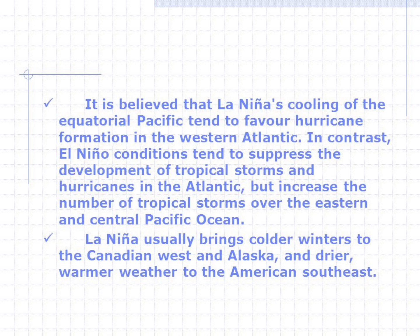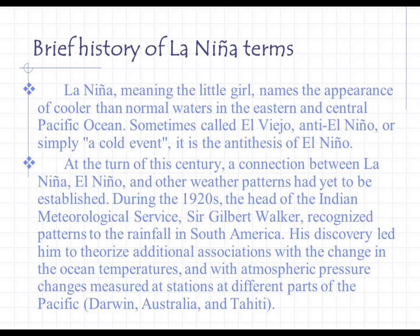In contrast, El Niño conditions tend to suppress the development of tropical storms and hurricanes in the Atlantic but increase the number of tropical storms over the eastern and central Pacific Ocean. La Niña usually brings colder winters to the Canadian west and Alaska and drier, warmer weather to the American southeast. Brief history of La Niña terms: La Niña — meaning 'the little girl' — names the appearance of cooler than normal waters in the eastern and central Pacific, sometimes called 'El Viejo,' 'anti-El Niño,' or simply a 'cold event.' It is the antithesis of El Niño.